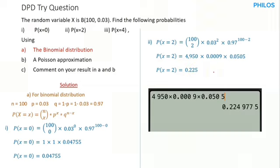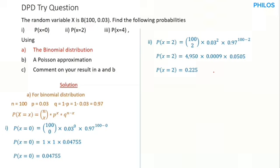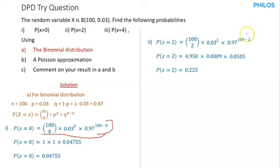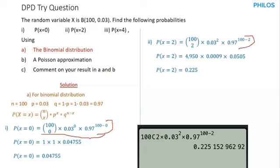Multiplying these together gives 0.2249775. In 4 decimal places, adding 1 to the 9 gives 10, so you carry the 1 to the 4, making it 0.2250. You can enter the whole expression on your calculator at once and in 3 decimal places you get 0.225.